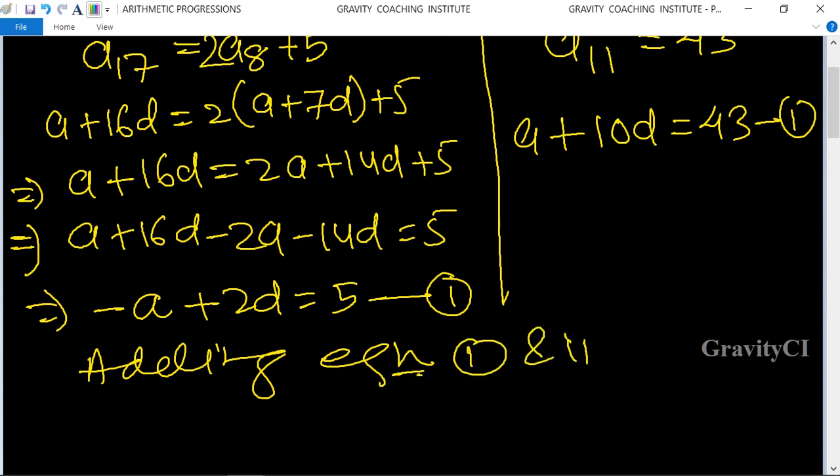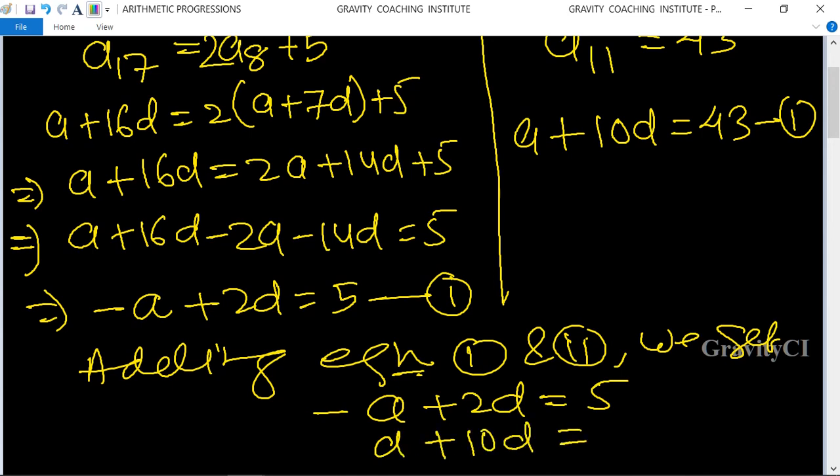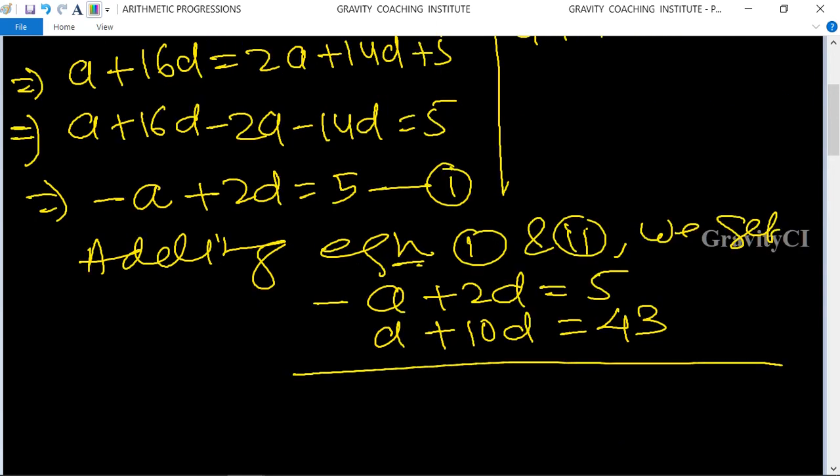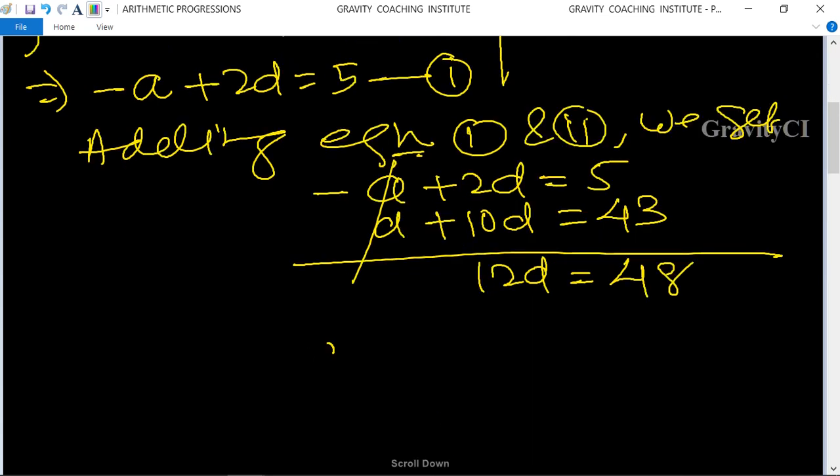Now adding equation first and second, we get -a + 2d equals 5 and a + 10d equals 43. The a cancels, and 12d equals 48, so d equals 48 upon 12, which equals 4.